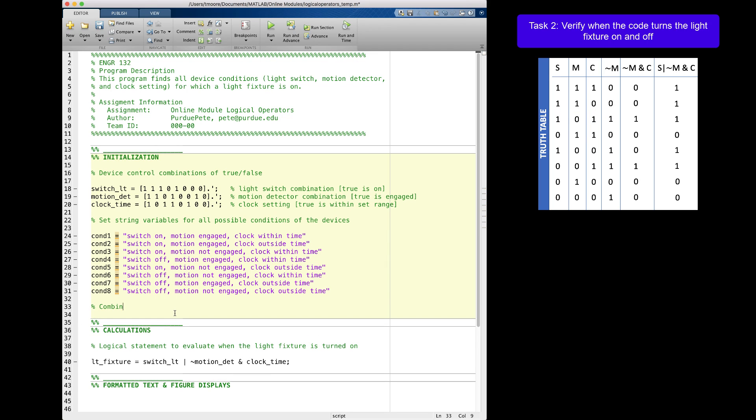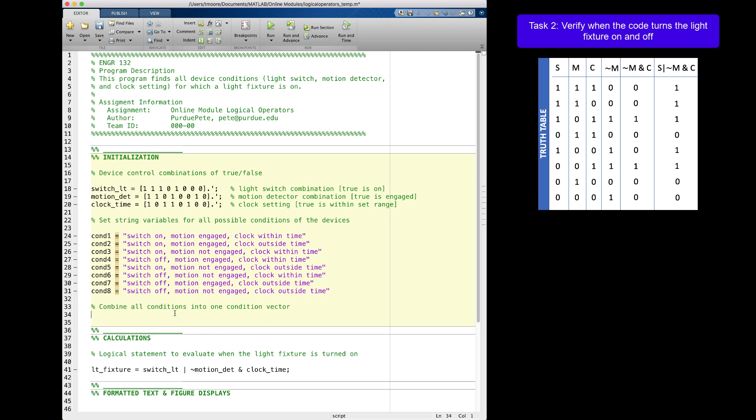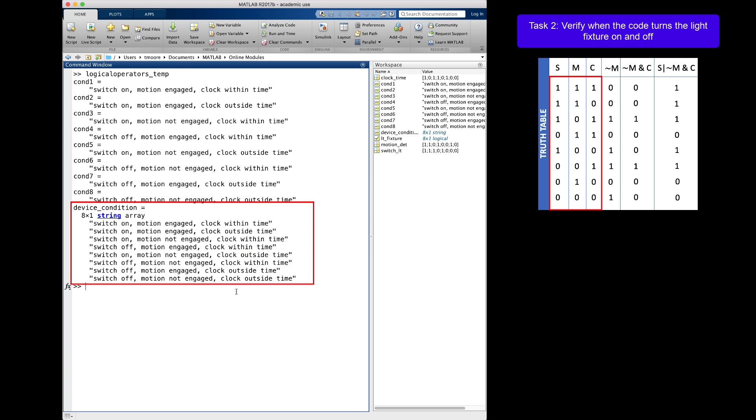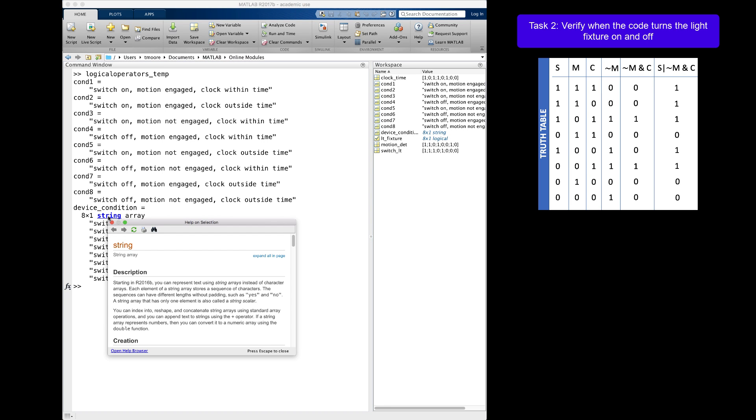Next, I will make a string array using each of these conditions, so I will have one array that represents all values in the truth table on the right. I will call this device underscore condition and use column vector notation to combine each of my string vectors. Alright, now that this is complete, let's check to make sure that my code provides me with the output I am expecting. I can see that each condition variable corresponds with the correct 1 and 0 in the truth table. As an aside, notice also that MATLAB provides a link for the string array. You can click this link to find out more about string arrays.